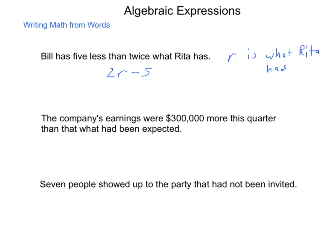The company's earnings were $300,000 more this quarter than what had been expected. If we take the base item - what had been expected - I'm going to call that value P, the expected profits. When I simplify this, I'm going to take the expected profits and add $300,000. To clarify, P is the expected profits in dollars.